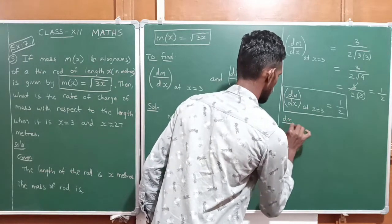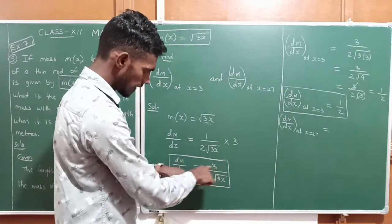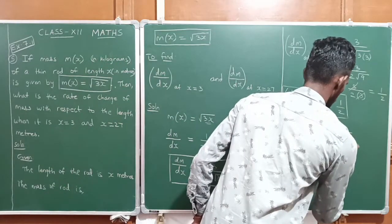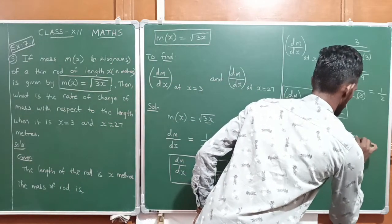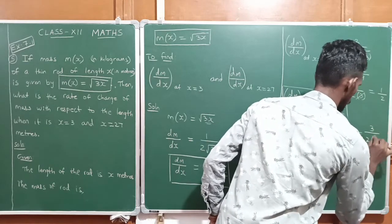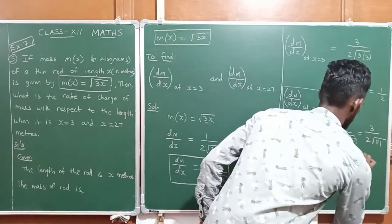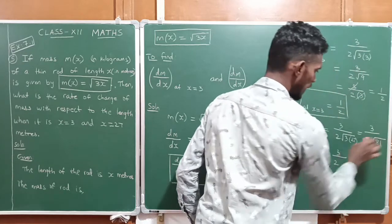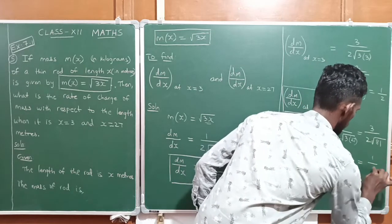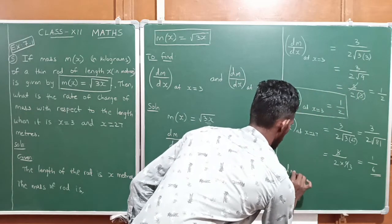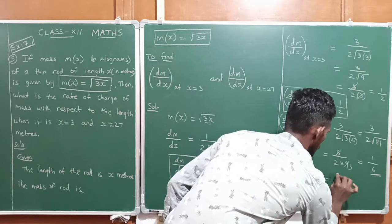Second, dm/dx at x = 27: substituting into 3/(2√(3x)), we get 3 divided by 2 into √(3×27) = 3 divided by 2 into √81. √81 = 9, so we have 3 divided by 2 into 9 = 3/18. The 3 and 9 cancel giving 1/6. So dm/dx at x = 27 is equal to 1/6.